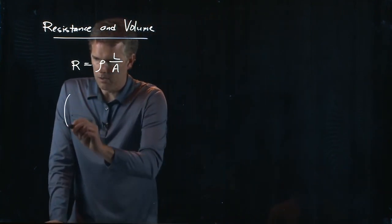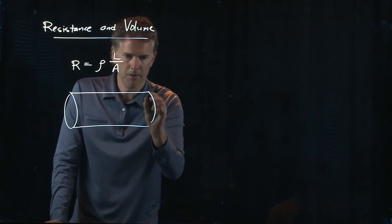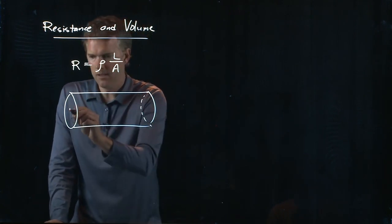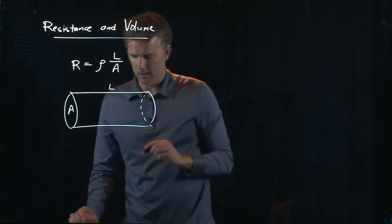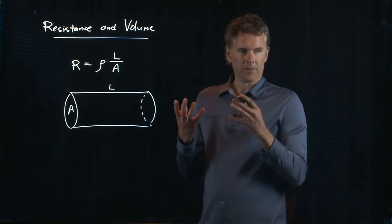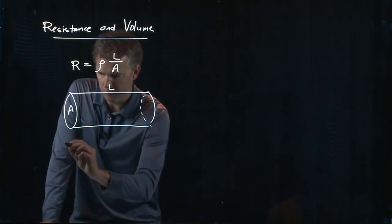Let's think about this section of cable here. A is, of course, the cross-sectional area. L is the length. So this cable occupies some volume.